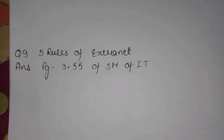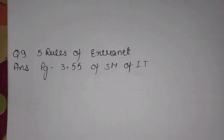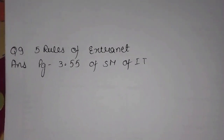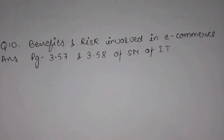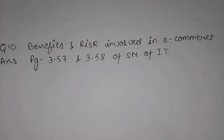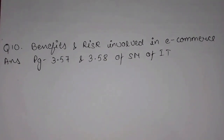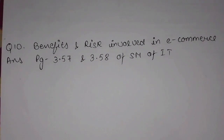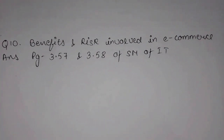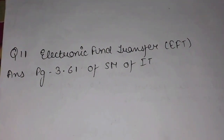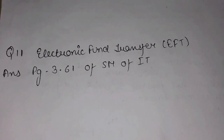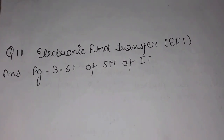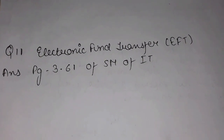Question 9 is Five Rules of Extranet. Its answer can be found on Page 3.55 of the Study Material of IT. Question 10 is Benefits and Risks Involved in E-Commerce, answer on Pages 3.57 and 3.58. Question 11 is Electronic Fund Transfer, answer on Page 3.61 of the Study Material of IT.